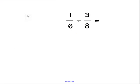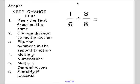And I'm going to go ahead and redo that because I want all of those steps there. So, keep, change, and flip. Keep the first fraction. So, I'm keeping 1 sixth. Change division to multiplication. And flip the numbers in the second one. So, this is going to become 8 over 3.